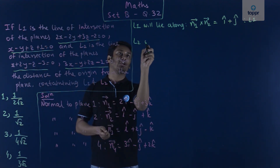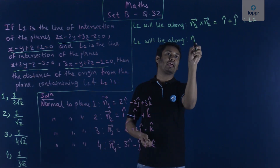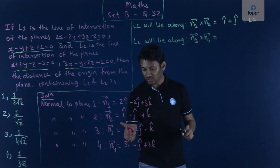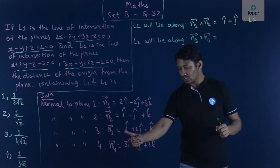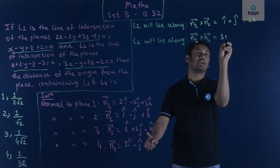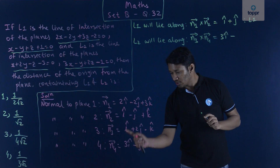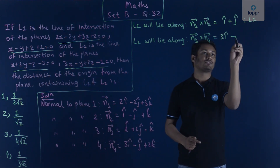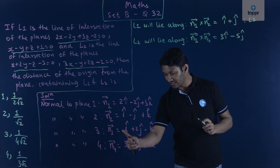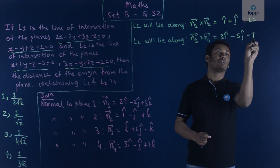Line L2 lies along N3 × N4. Computing: the first component is 2×2 − 1 = 3, giving 3i. The second component is −(2 + 3) = −5, giving −5j. The third component is −1 − 6 = −7, giving −7k. So the direction of L2 is 3i − 5j − 7k.